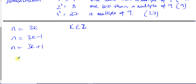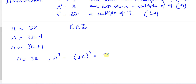Taking the case when n equals 3k: n cubed is therefore (3k) cubed, which is 27k cubed, which equals 9 times 3k cubed. Since k is an integer, this is clearly a multiple of 9.